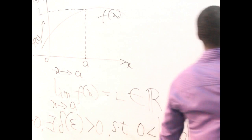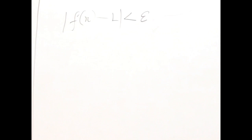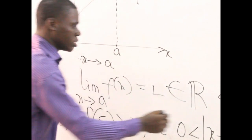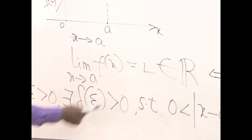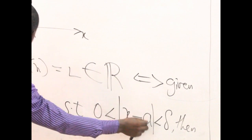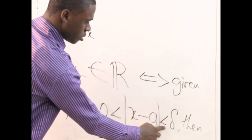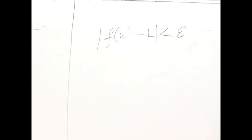Then we say that the absolute value of the function minus its limit is going to be less than epsilon. So: the limit of this function as S approaches E is given as L, which presupposes that given any epsilon positive, there exists delta — a function of epsilon and greater than zero — such that if we have zero less than the absolute value of S minus E, less than delta, then the absolute value of the function minus its limit should be less than epsilon. Epsilon is a very small number, almost zero.